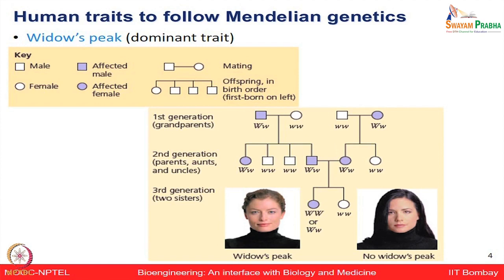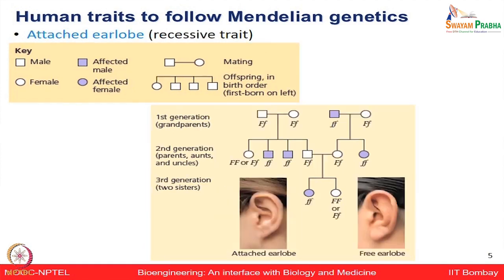There are certain characteristics like the ear lobe — whether it is an attached ear lobe or a free ear lobe. You will see some variations like this. These are recessive characteristics which are found in some families, and they also obey Mendelian laws of inheritance.